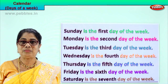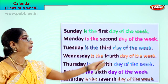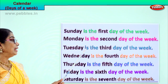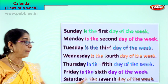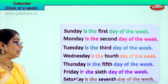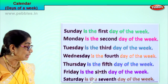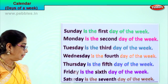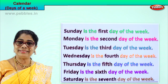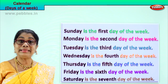So now you learn to read. Read quickly: Sunday is the first day of the week, of the week. Day of the week. Fourth day of the week. Thursday is the fifth day of the week. Sunday is the seventh day of the week.